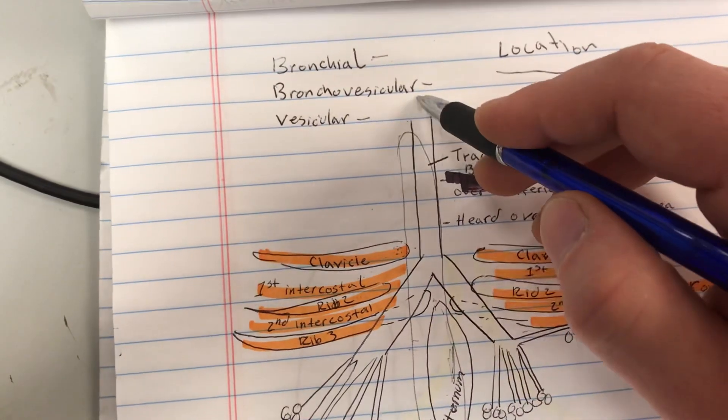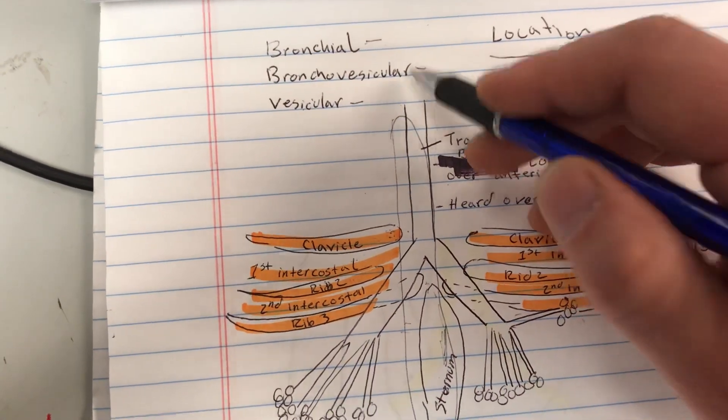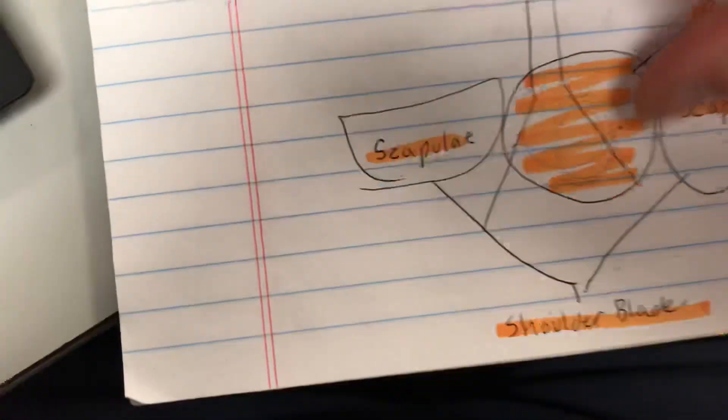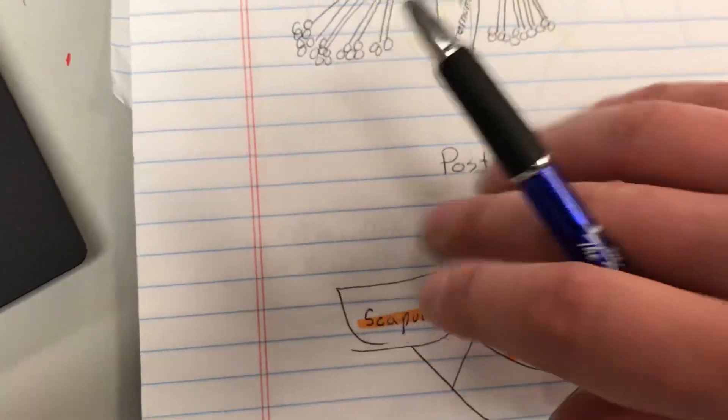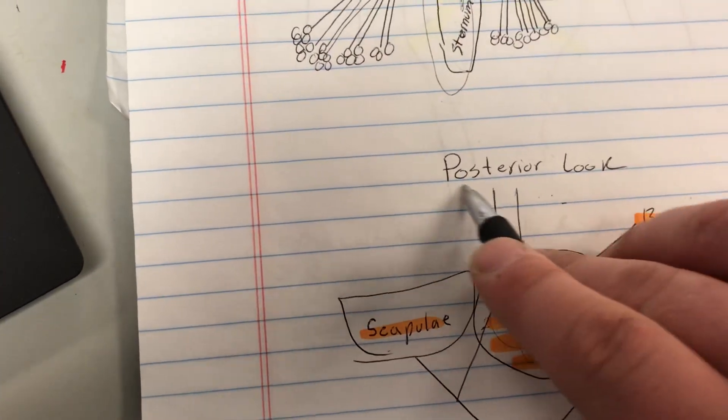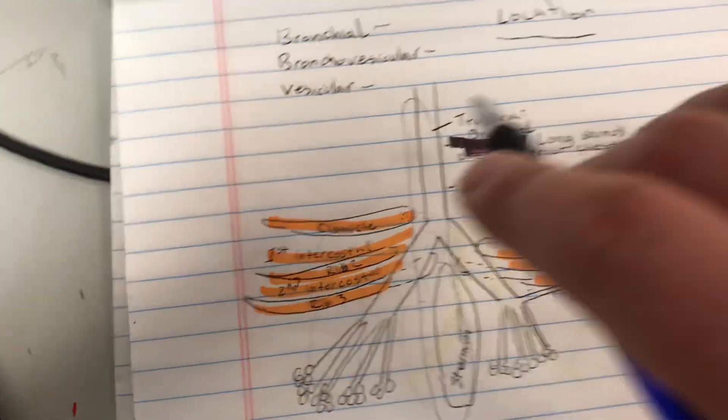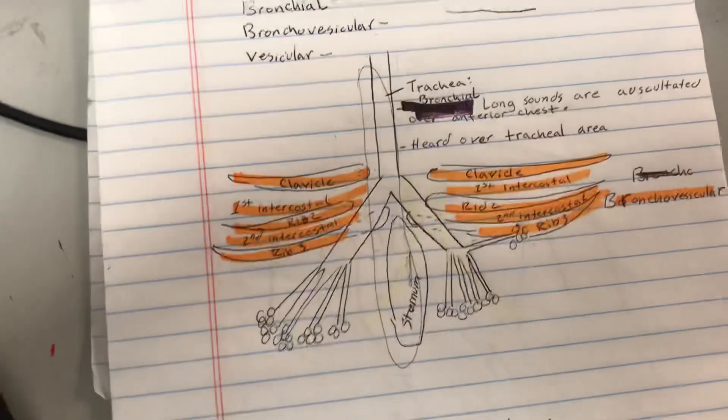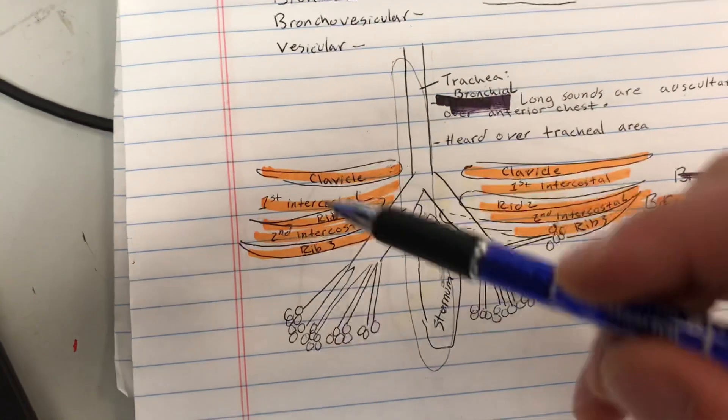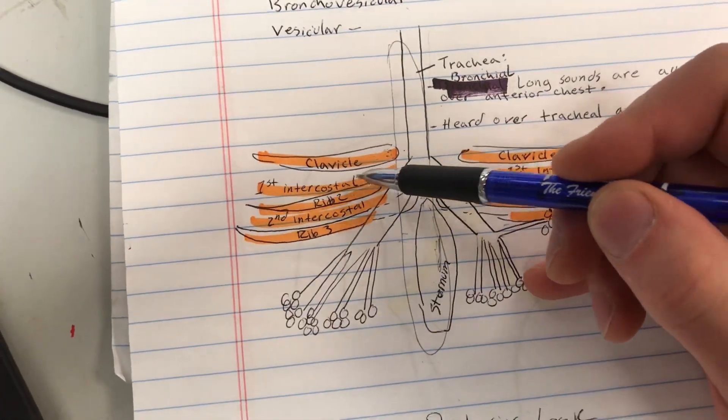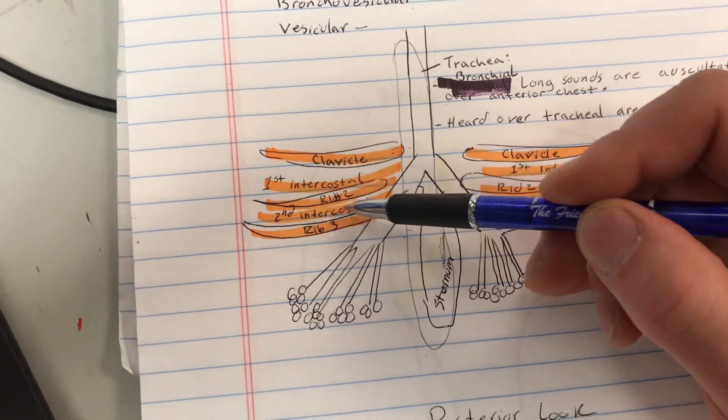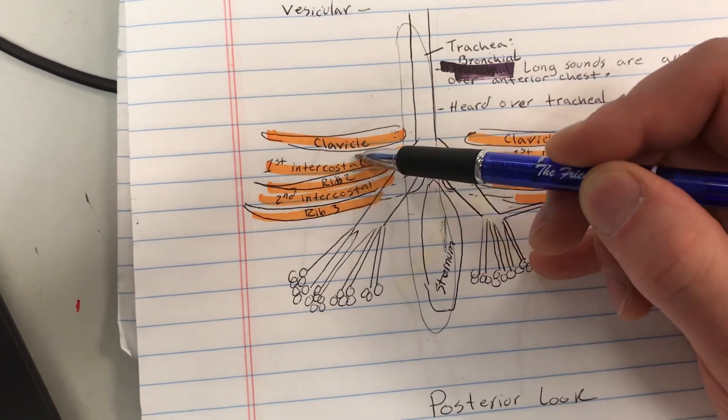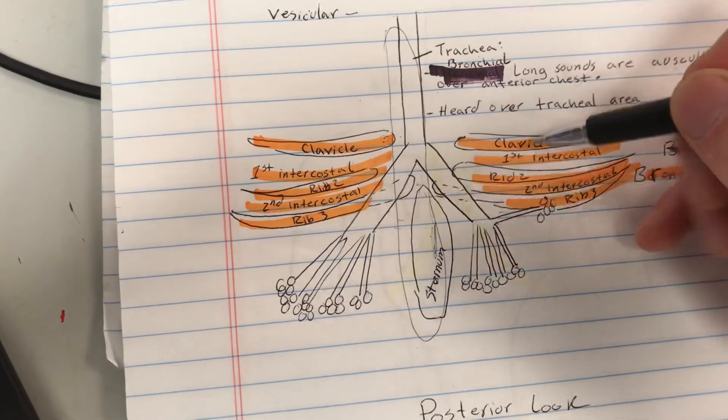Your bronchovesicular lung sounds can be located on the front of the chest and the back of the chest. The back of the chest is known as posterior, that means back, and anterior. If you're taking the lung sounds on the front of the patient, meaning anterior of the patient, your lung sounds are going to be found in your first and second intercostal muscles. So that's where you want to auscultate.